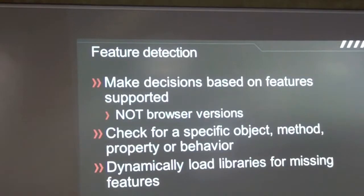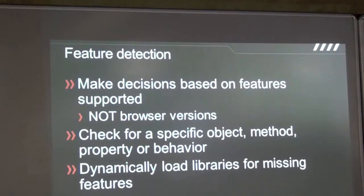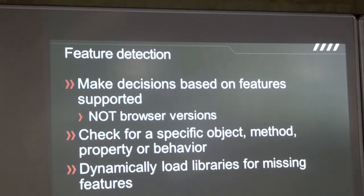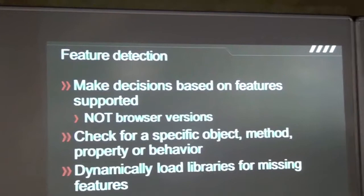Modernizr is basically a library that helps you deal with this. The basic idea is: don't make decisions based on browser versions. Instead, try to detect programmatically whether a particular feature is available in whatever the current browser is. Maybe you can check for the existence of a particular object, method, property, or particular behavior — some kind of fingerprinting to figure out what the current browser supports. Then dynamically, if it is a critical aspect of your site, you might want to dynamically load supplementary libraries which provide support for that particular feature.